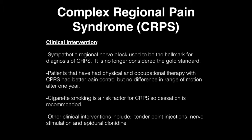Under clinical intervention, sympathetic regional nerve block can be used for pain and was the hallmark for diagnosis of complex regional pain syndrome, but it is no longer considered the gold standard. Patients who had physical and occupational therapy had better pain control but no difference in range of motion after one year. Cigarette smoking is a risk factor and cessation is recommended. Other clinical interventions include tender point injections, nerve stimulation, and epidural clonidine.